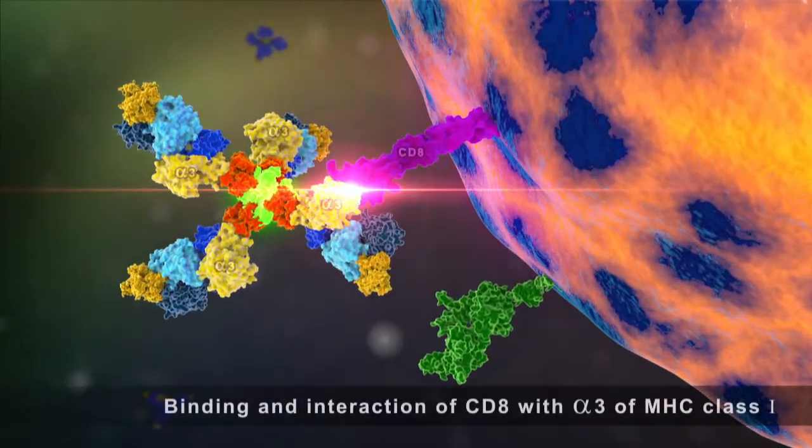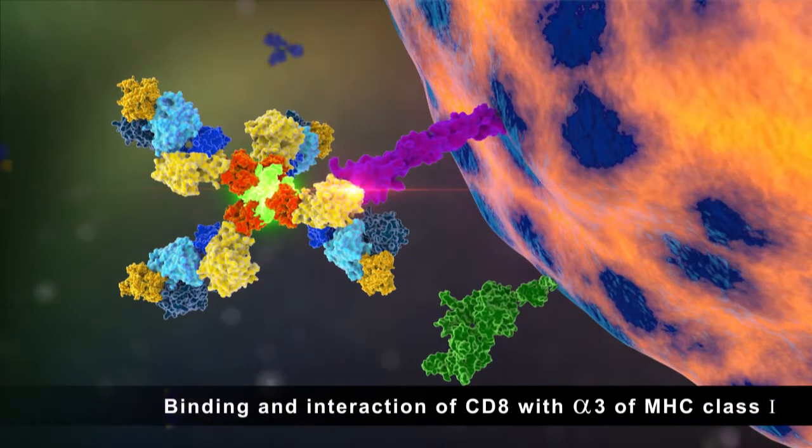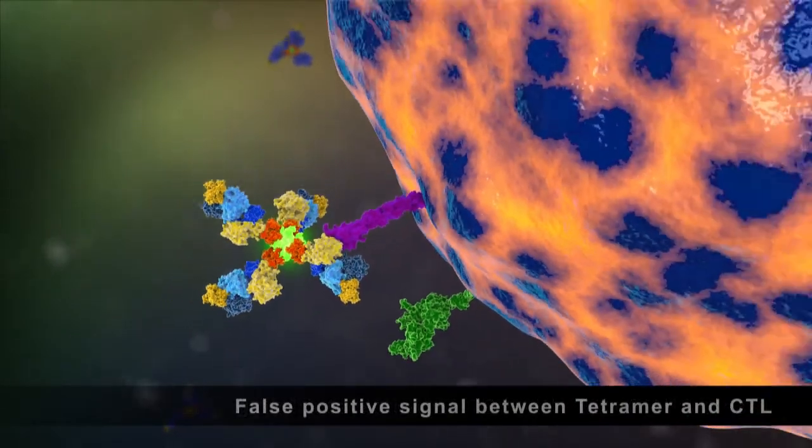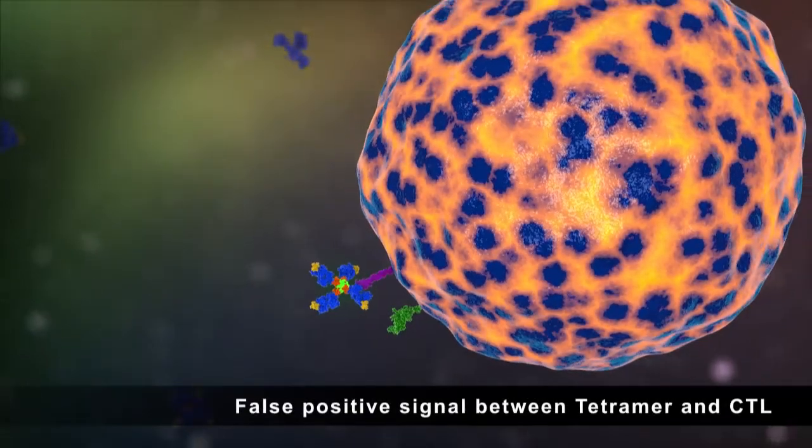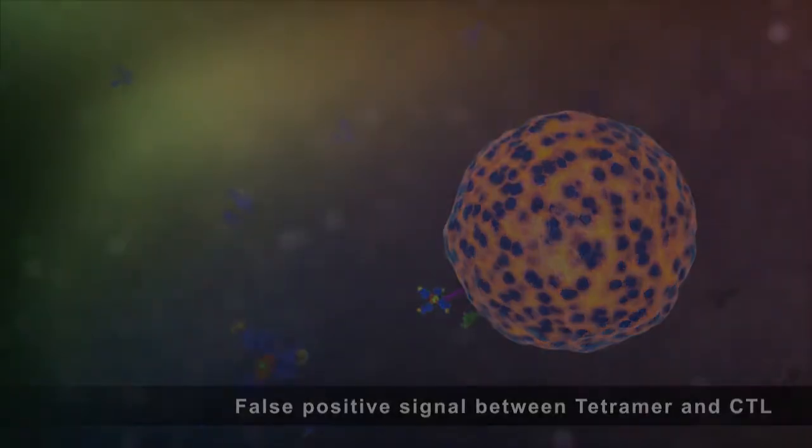Therefore, HLA molecules have binding sites for CD8 molecules. This could be a possible cause of false positive signals between tetramers and CTLs.